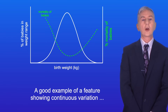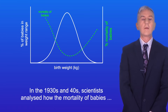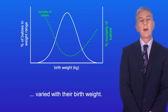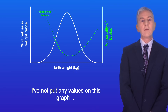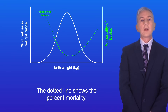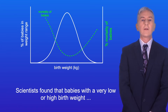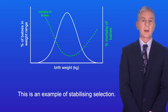A good example of a feature showing continuous variation is birth weight in humans. In the 1930s and 40s, scientists analyzed how the mortality of babies varied with their birth weight, and I'm showing you that here. I've not put any values on this graph because it's more important that you understand the pattern. The dotted line shows the percent mortality. Scientists found that babies with a very low or high birth weight were less likely to survive than those with a birth weight around the mean. This is an example of stabilizing selection.